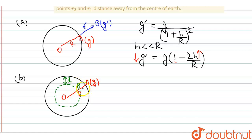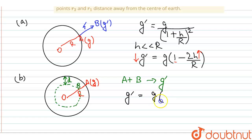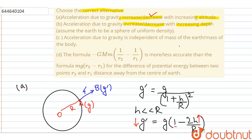At point B, the acceleration due to gravity is g-dash. What is the relation between this acceleration and the normal acceleration at the surface of the Earth, and the depth? From this relation we can see that by increasing the depth, g-dash will get decreased. So acceleration due to gravity decreases with increasing depth.